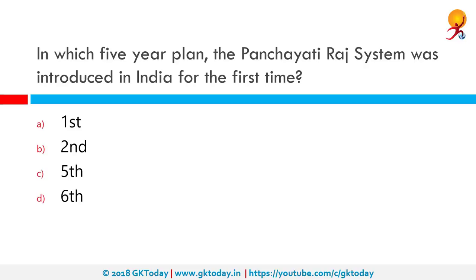In which five-year plan was the Panchayati Raj system introduced in India for the first time? The institution of Panchayati Raj was inaugurated by Jawaharlal Nehru on October 2nd, 1959, in Nagaur district of Rajasthan. Nine days later, Andhra Pradesh became the second state to launch Panchayati Raj at Shadnagar near Hyderabad.